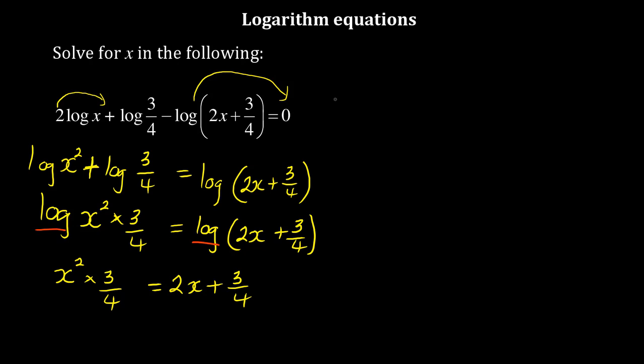To solve for x, this is the same as saying 3 over 4 x squared minus 2x minus 3 over 4 equals 0. I can multiply everything by 4 to get rid of that denominator, which gives 3x squared